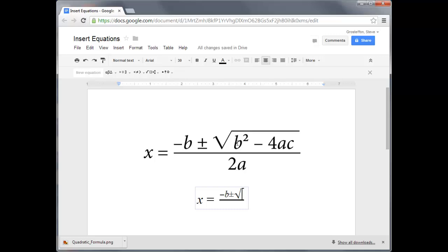Underneath of the square root, we have b squared minus 4ac. To type b squared, you can either go to the mathematical operators menu and select x raised to the b.